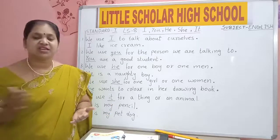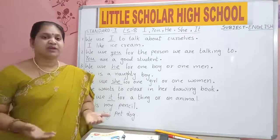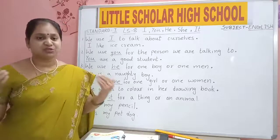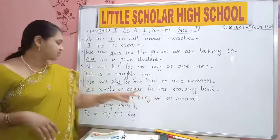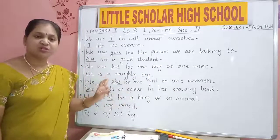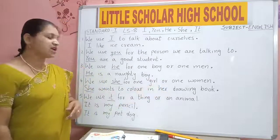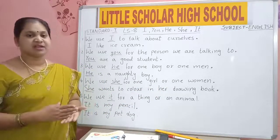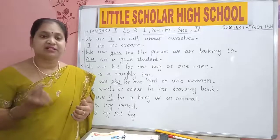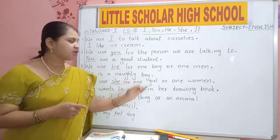SHE is used to talk about one girl or one woman. She is my grandmother. I love her very much. She tells me good stories. She wants to color in her drawing book — one girl only. She loves me very much. She tells me stories at night. When we are using SHE, we are talking about one girl or one woman — your mother, your grandmother, your sister, your elder sister. They are all girls.